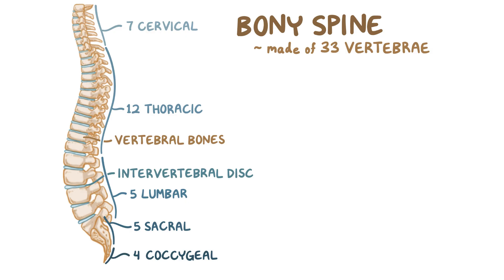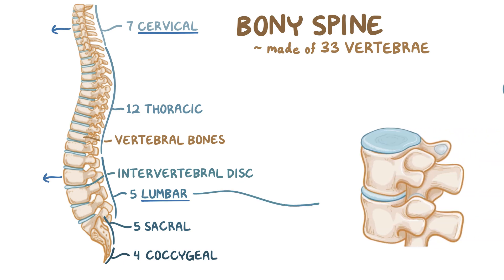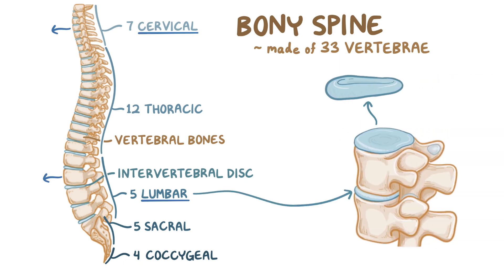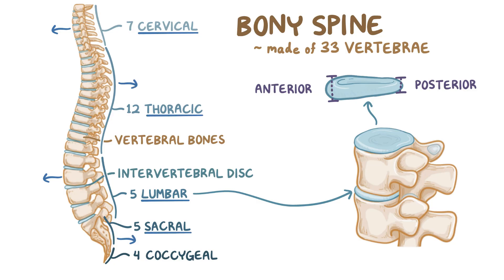Normally, the cervical and the lumbar spines slightly curve inward. This results from the fact that the intervertebral discs in these two regions are thicker anteriorly than posteriorly, which causes this part of the spine to lean forward. On the other hand, the thoracic and the sacral spines are normally curved backward, which is normal kyphosis.